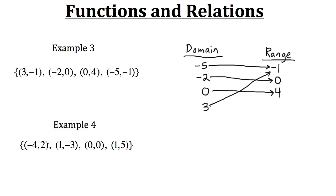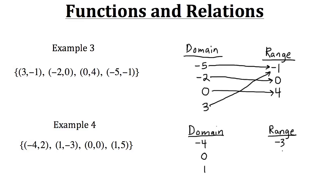Now let's try it one more time with example four. For the domain we have negative four, one, and zero. Notice that one is repeated in the relation but we only need to put it down once. So the domain in order is: negative four, zero, and one. For the range, the outputs are two, negative three, zero, and five — in increasing order: negative three, zero, two, and five.